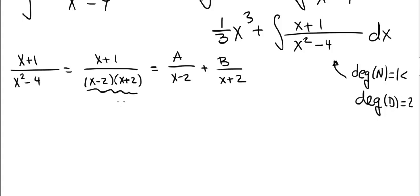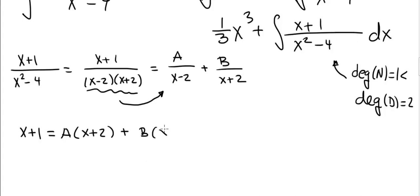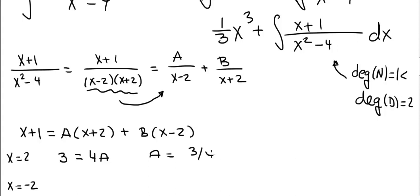We multiply both sides by x minus 2 times x plus 2. That leaves x plus 1 on the left, and A times x plus 2 plus B times x minus 2 on the right. Plugging in x equals 2, we get 3 equals 4A, so A equals 3 over 4. Plugging in x equals minus 2, we get minus 1 equals minus 4B, so B equals 1 over 4.